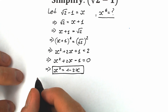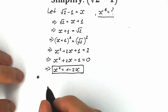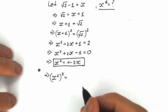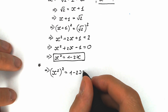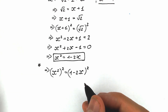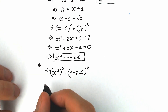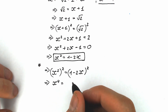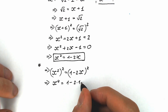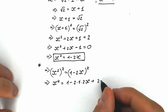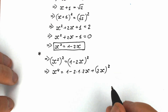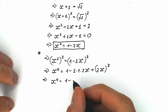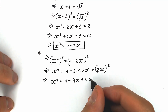Let's raise both sides of x squared equal to 1 minus 2x to the 2nd power. So x squared to the 2nd power equals, by power rules, x to the 4th power. On the right side, we raise the parenthesis 1 minus 2x to the 2nd power. Expanding using the school identity, we get 1 minus 2 times 1 times 2x plus 4x squared, which gives x to the 4th power equal to 1 minus 4x plus 4x squared.